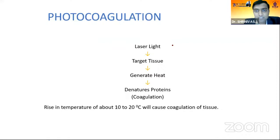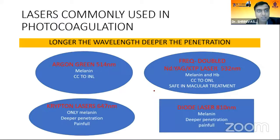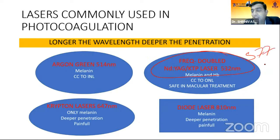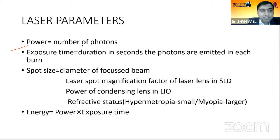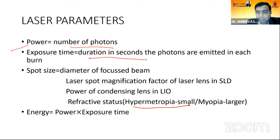In photocoagulation, laser light hits the target tissue, generates heat, and denatures proteins — causing coagulation. A rise in temperature of about 10 to 20 degrees causes tissue coagulation. Lasers used include the frequency-doubled Nd:YAG green laser at 532 nm, the yellow laser at 577 nm with slightly better depth penetration, and the diode laser at 810 nm for deeper penetration. Key parameters are power (number of photons), exposure time (duration in seconds), spot size (dependent on lens, condensing lens power, magnification factor, and refractive status — smaller in hypermetropia, larger in myopia), and energy (power × exposure time).